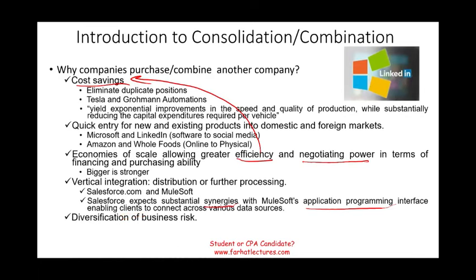One more reason companies buy other companies is diversification of business risk — you want to be in other businesses for the sake of risk management. And there can be unlimited reasons; one of them could simply be the ego of the board of directors or CEO wanting to expand and be the largest. This is just a sample list of reasons.